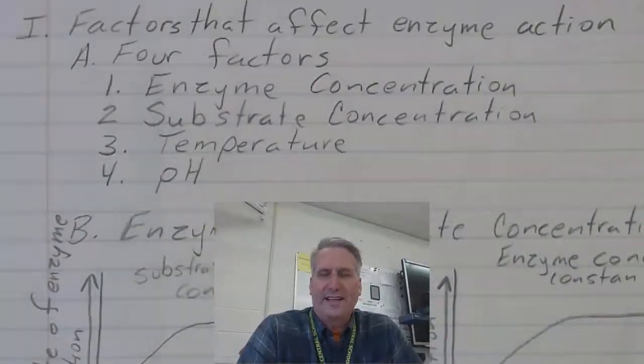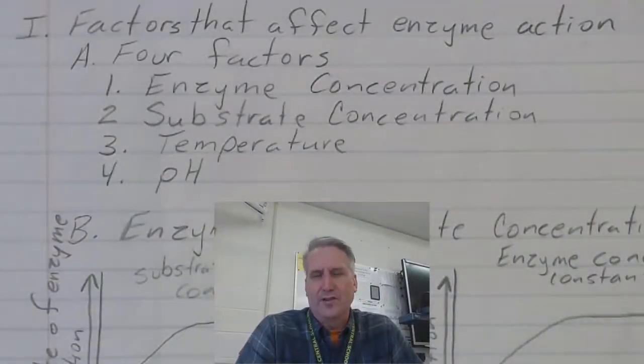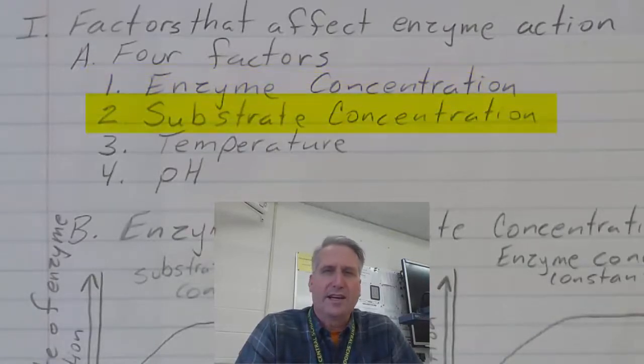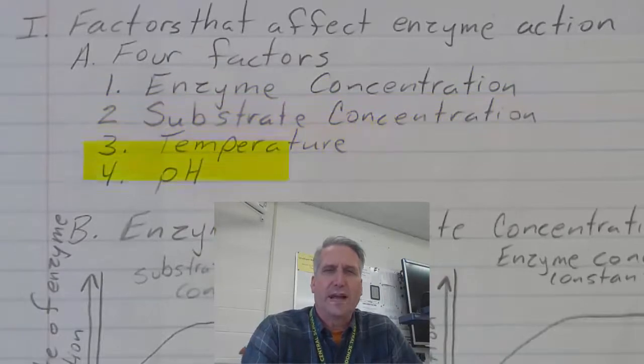The four factors that affect an enzyme's ability to turn substrates into products are enzyme concentration, substrate concentration, temperature, and pH.